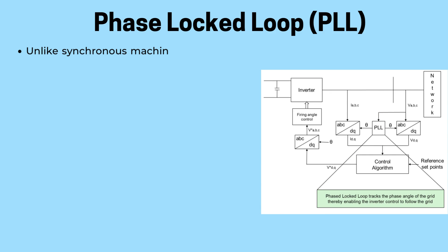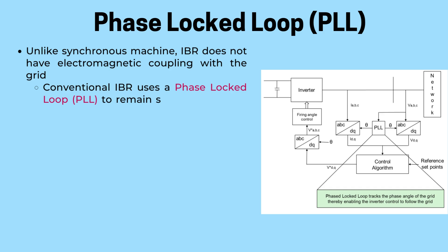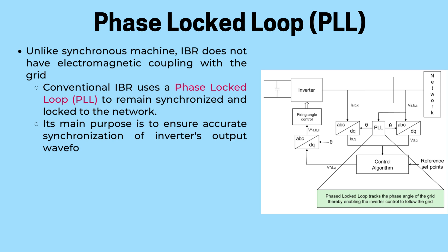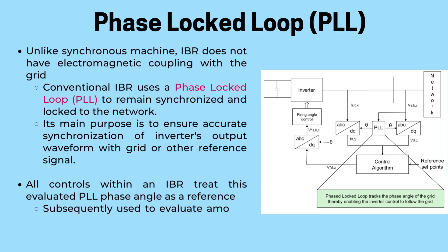In the world of power systems, synchronization is a crucial aspect of ensuring that different devices and resources operate in harmony. In the case of inverter-based resources, which lack the electromagnetic coupling with the grid found in synchronous machines, a phase-locked loop comes into play. The PLL serves as the backbone for keeping IBRs synchronized and locked to the network, allowing for accurate alignment of the inverter's output waveform with the grid or another reference signal. Within an IBR, the evaluated phase angle of the PLL serves as a reference for all its controls, determining the amount of current the IBR needs to inject into the system.